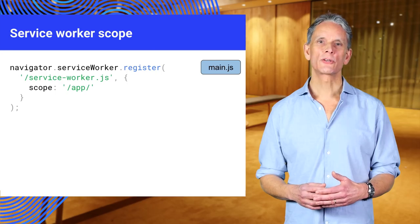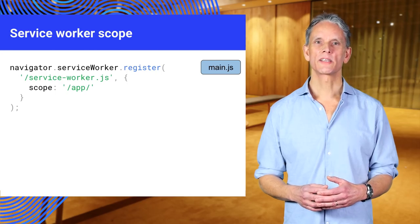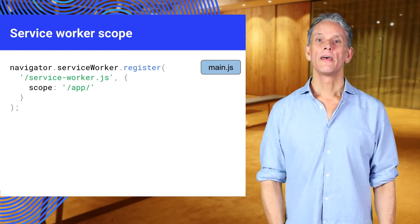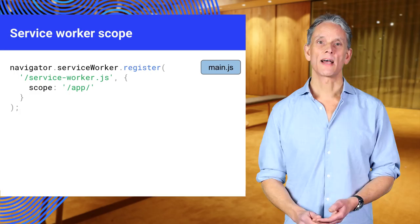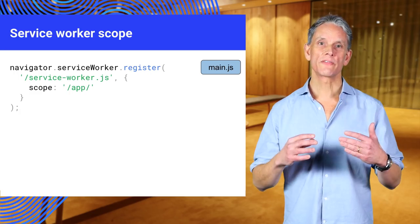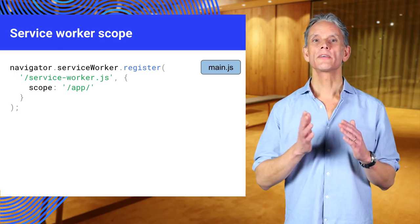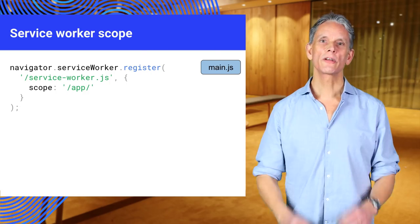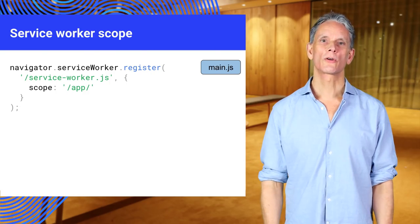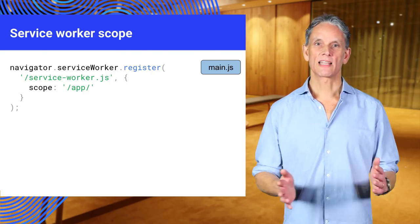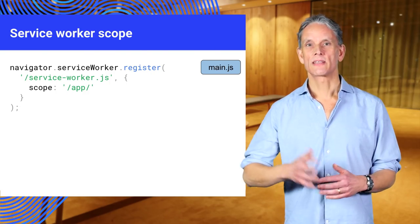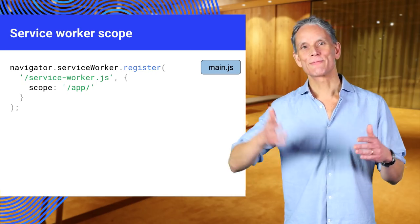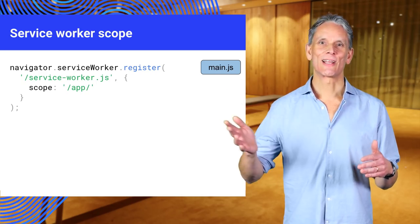You can also set an arbitrary scope by passing in an additional parameter when registering. In this example, we're setting the scope of the service worker to /app, which means the service worker will control requests from pages like /app, /app/lower, and /app/lower/lower.